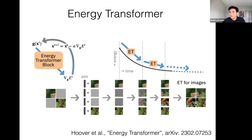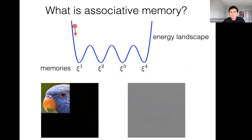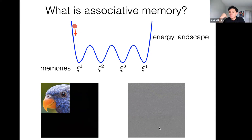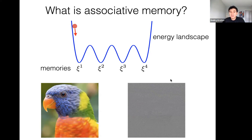The goal is to design this energy so that as computation progresses the Energy Transformer inpaints the missing patches. The big difference from earlier examples is that here the network must reconstruct any meaningful image — not just specific pre-stored images. It's a much more sophisticated system, but as you'll see it works quite nicely.